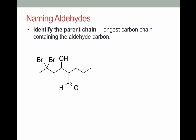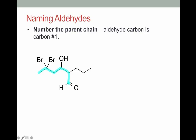The best way to do this is through an example. Our first goal is to identify the parent chain. One of the most common mistakes people make is to see the horizontal chain in the compound and say that has to be the parent. The problem is if you do that, your aldehyde carbon isn't part of the parent, so that doesn't work. We need to make sure the aldehyde carbon is part of the parent chain. In that case, our longest carbon chain that contains the aldehyde carbon is this. From here we need to number our carbon chain, setting the aldehyde carbon to number one and then numbering out the chain.